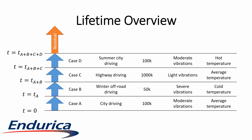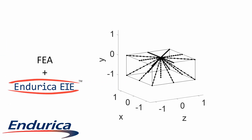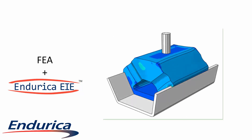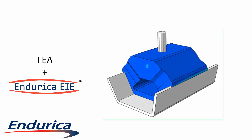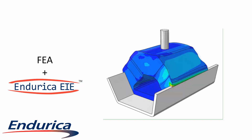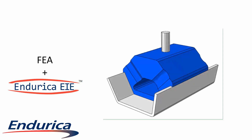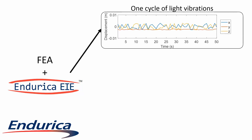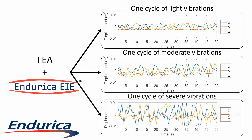We need to generate strain histories for the three cases. To accomplish this, we will use a finite element solver in Endurica EIE. Using EIE, we define a map of our model's working space. This map is made up of a set of branches and points that are used to drive the finite element model. Using this set of finite element solutions, EIE allows us to easily generate many histories by interpolating the results in the global map. For our problem, we generate the light vibrations, the moderate vibrations, and the severe vibrations by interpolating our set of finite element results.